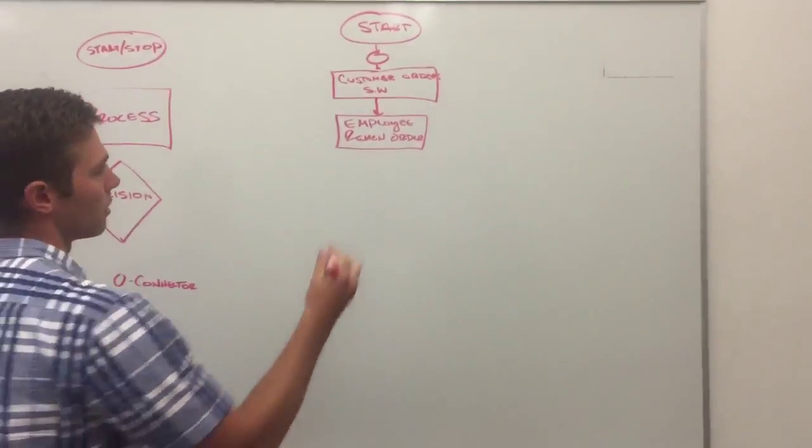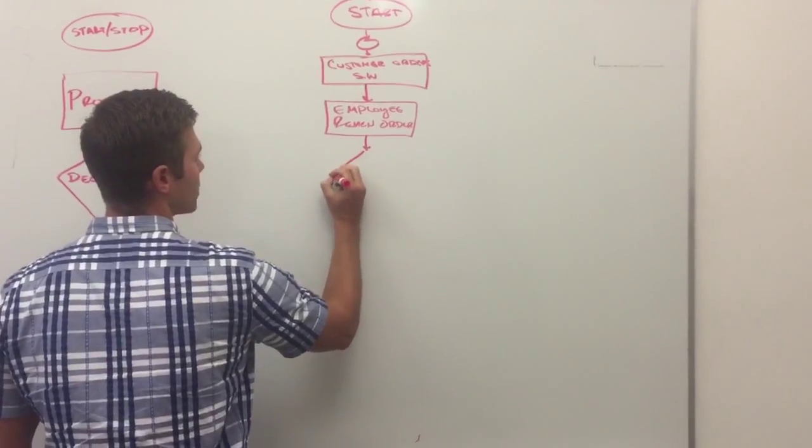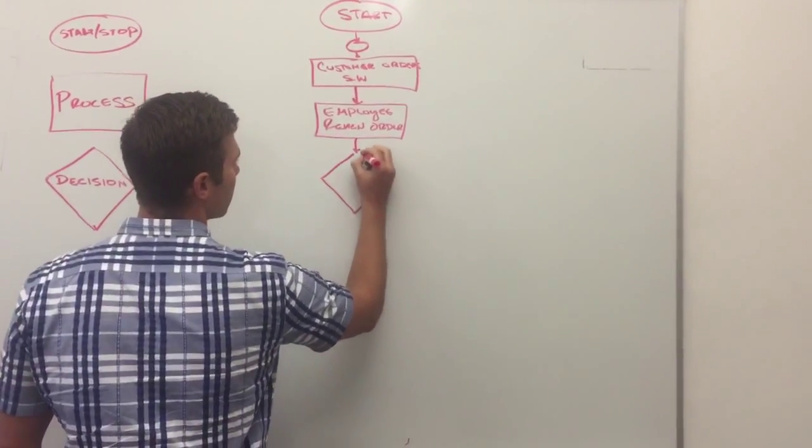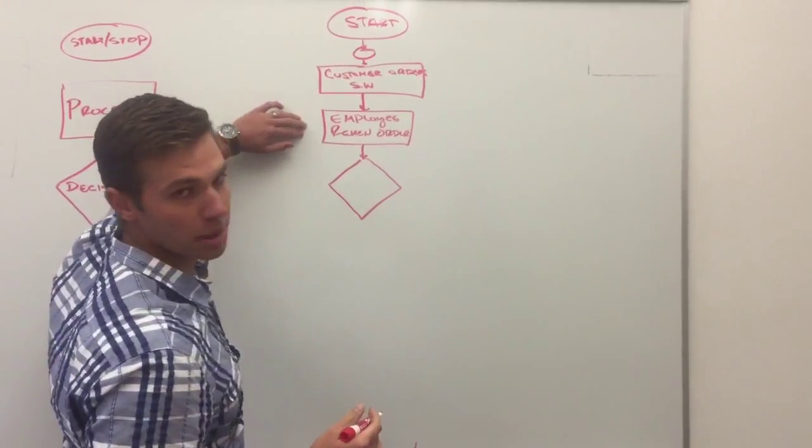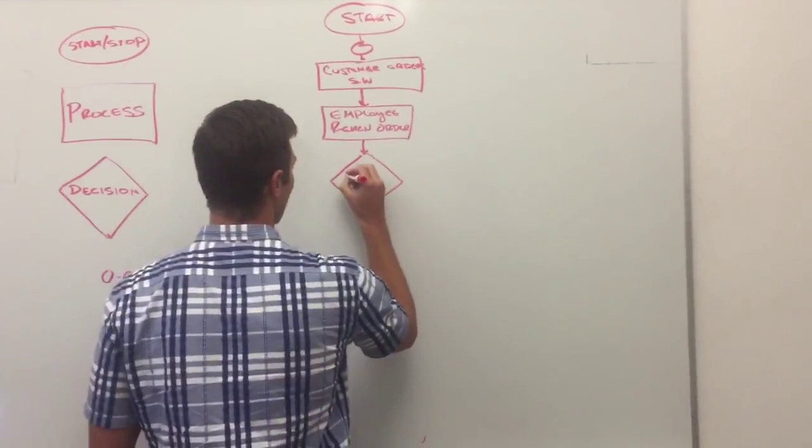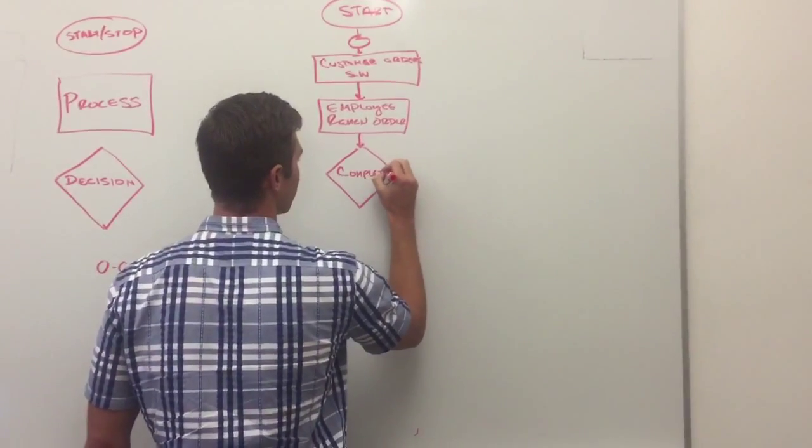From this point, the employee is going to make a decision. So if you'll remember, our decision is right here. And the employee is basically going to say, is the order complete, or is it not? So what we can do is we can just put the words complete inside the box.